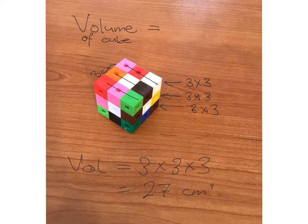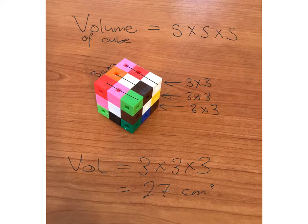For a cube, this gives us a very easy formula. No matter what your side length is, if your side length is S, you just take S times S times S to get your volume.